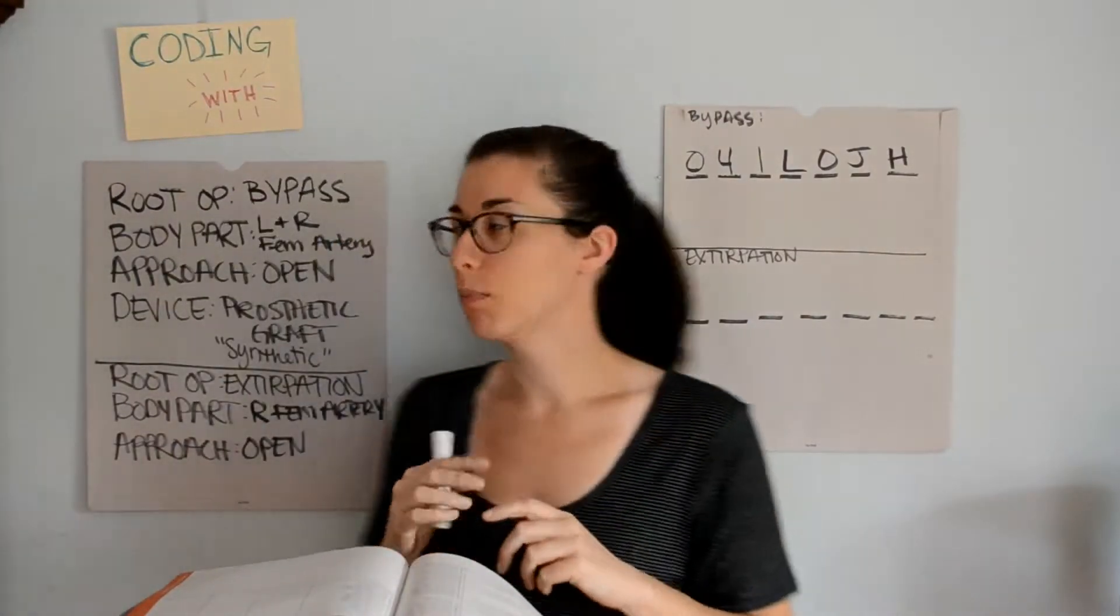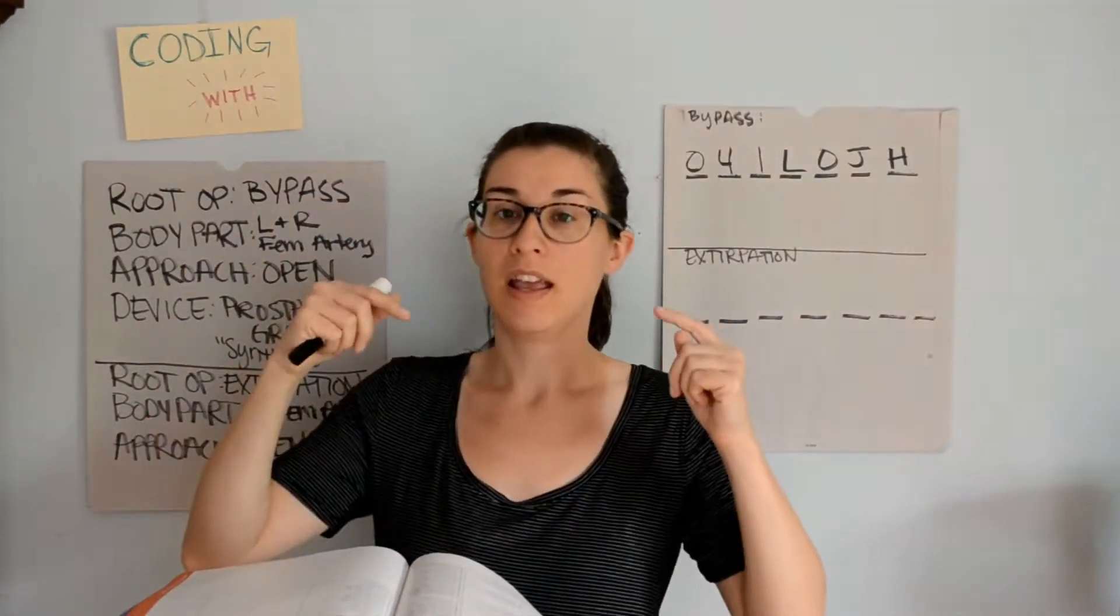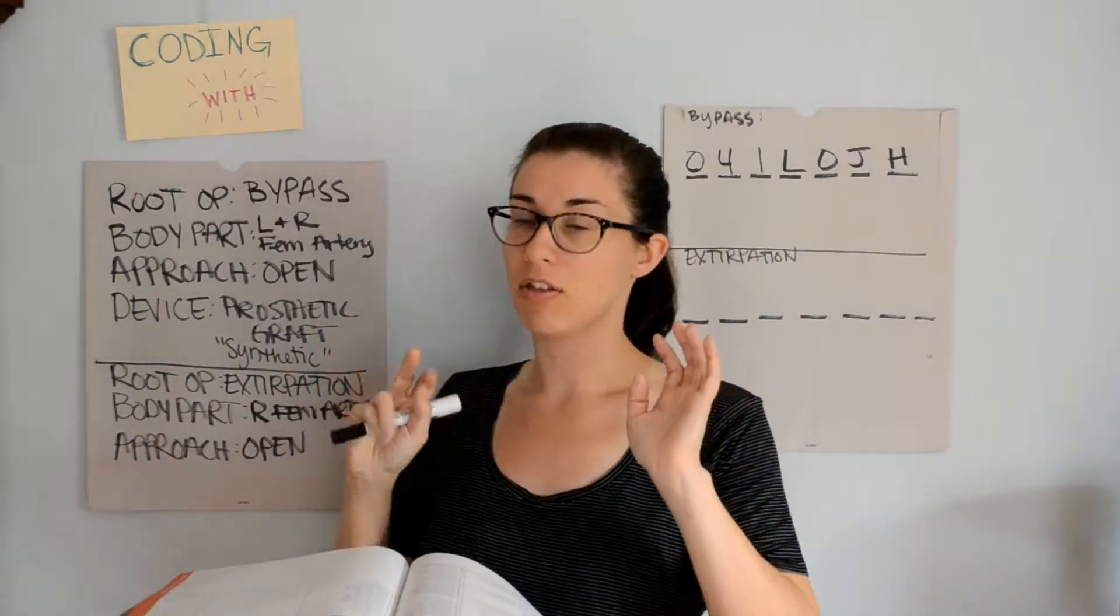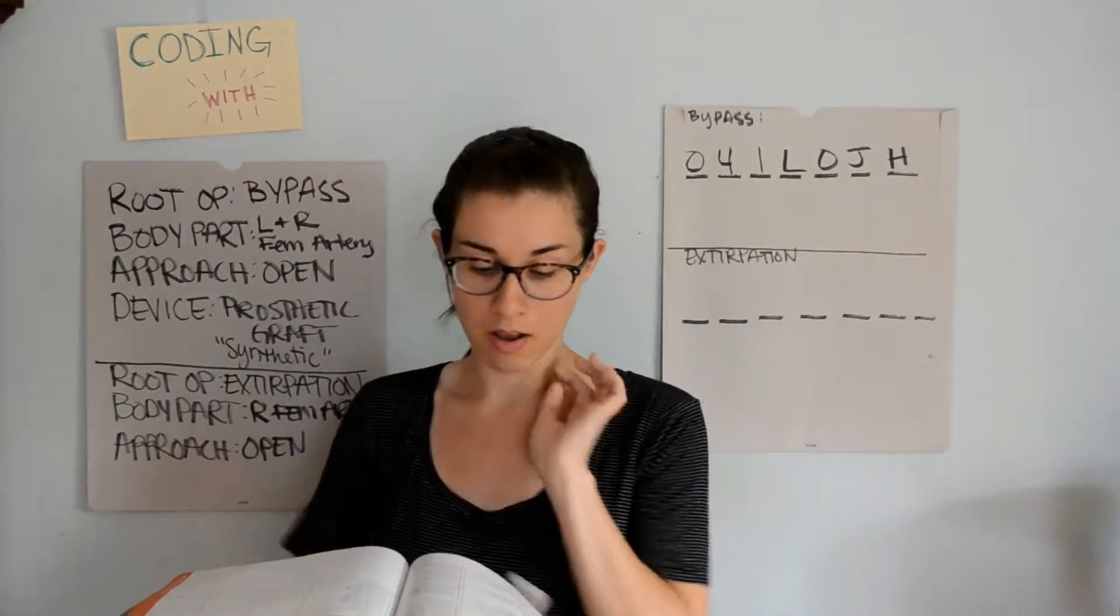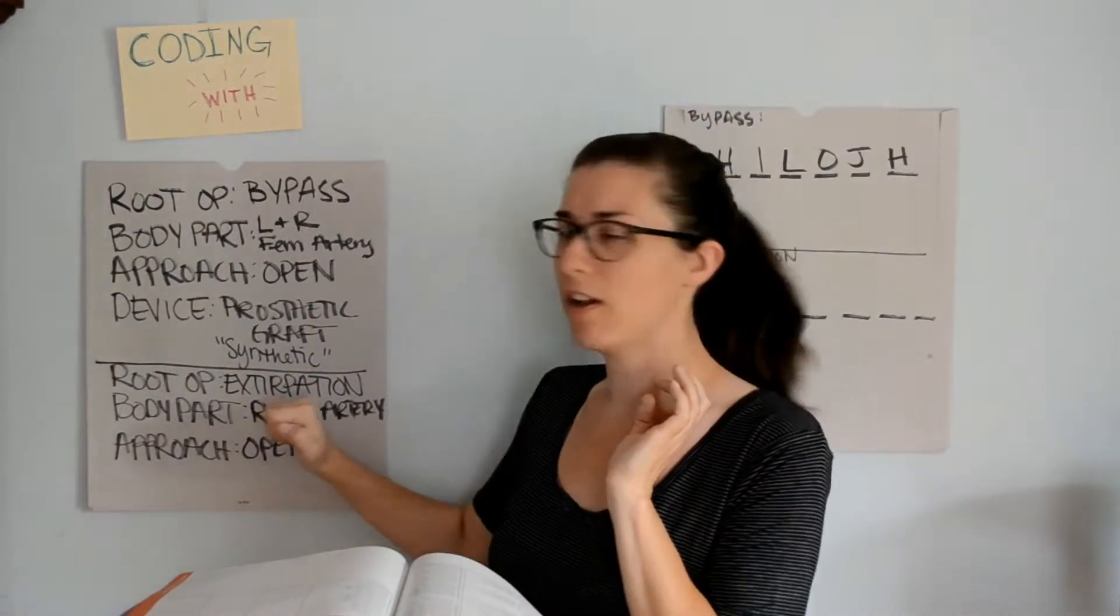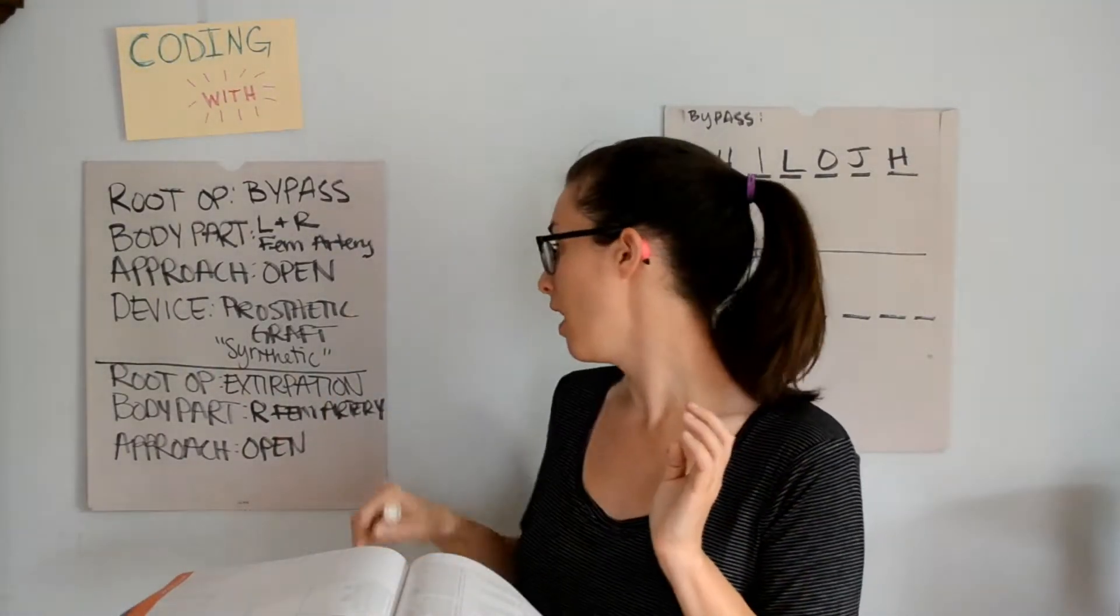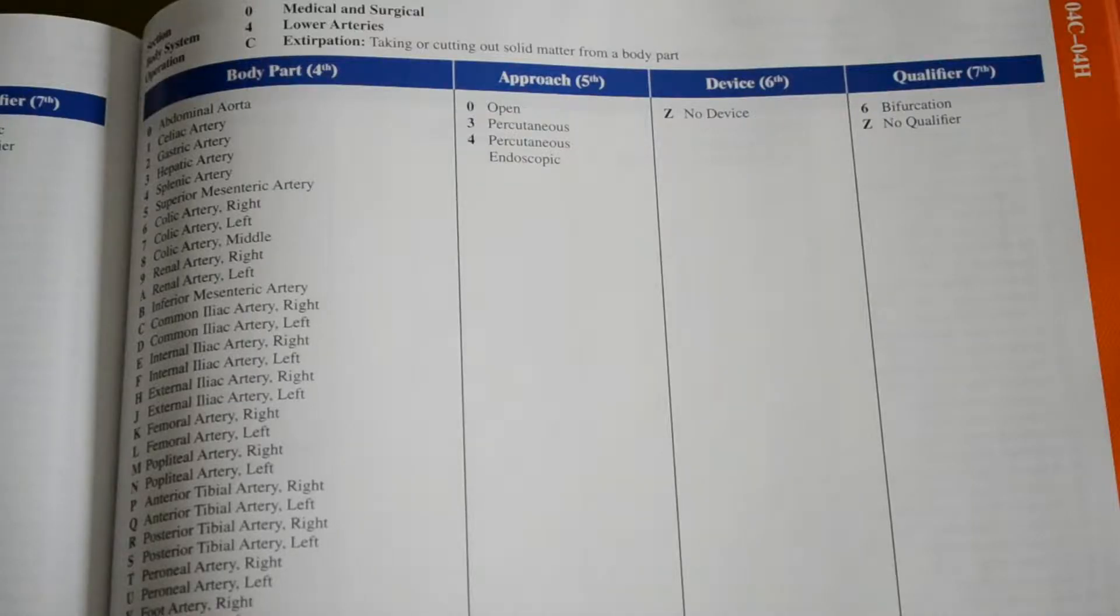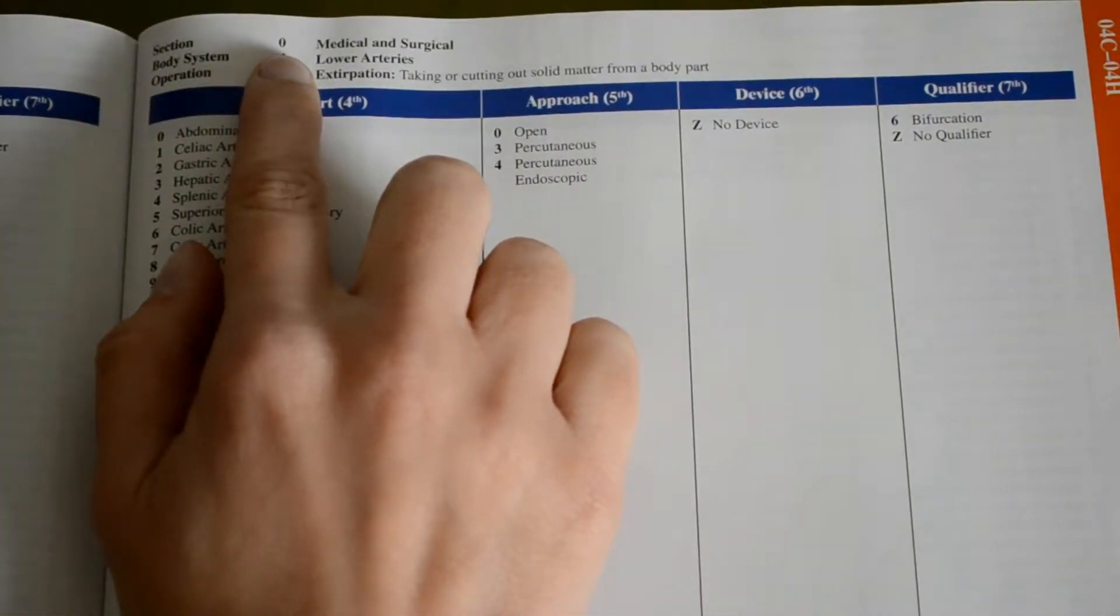Now we just need to look for the extirpation root operation, because that was the second procedure that happened in the surgery. They were not connected to each other. The thrombectomy was not an integral part of the bypass graft procedure, so it is separate. And the extirpation happened on the right femoral artery, meaning we are going to stay in the same chapter of the lower arteries.